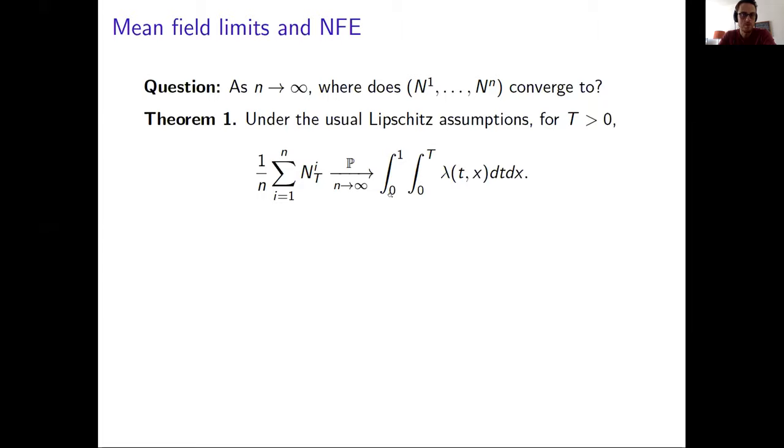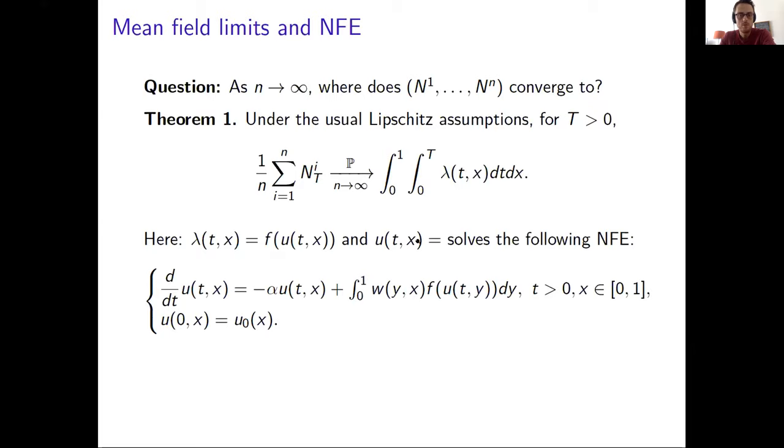And then it turns out from our analysis that this lambda(t,x) can be written as a function of u(t,x). And this u(t,x) solves a scalar Neural Field Equation.